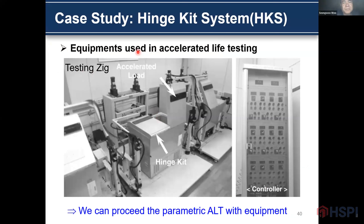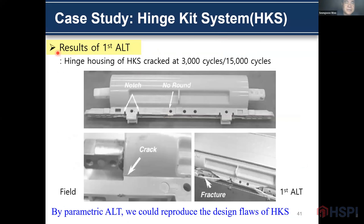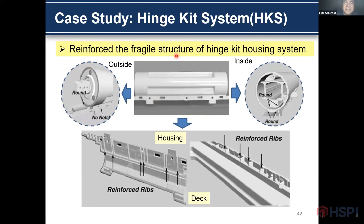This is the equipment used for ALT testing of the hinge kit. This is the hinge kit system, the load isolator, the test jig, and the controller. We can proceed with the parametric ALT with this equipment. The first parametric ALT result showed that the hinge kit housing cracked at 7,000 and 50,000 cycles. We found a lot of cracks on the surface of the hinge kit housing. By parametric ALT, we reproduced the design flaw. As an action plan, we re-imposed the structural ribs of the hinge kit housing, added rounding on the outside and inside, and re-imposed ribbing on the housing and deck system. We also found liquid oil damper leakage coming from a problematic sealing structure, and we modified the sealing structure.